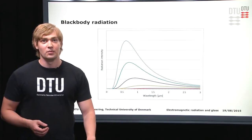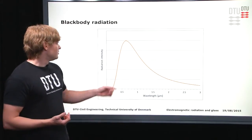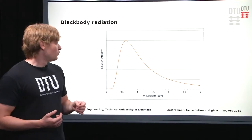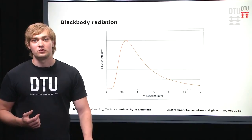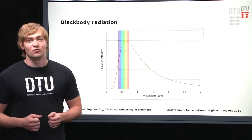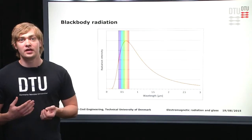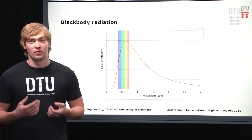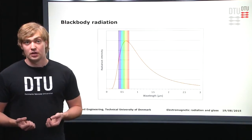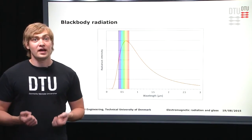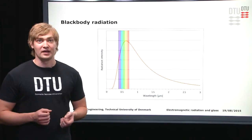Why is 5,800 K an interesting number? Well, that's the surface temperature of our sun. We can see that the peak is there around 0.7 micrometers, and if we look at where the visible light spectrum is, it's in and around this peak. This is why we can see blackbody radiation in this spectrum — it's simply because that's where the sun provides the most. If we could see in any other spectrum, the light would simply be dimmer.